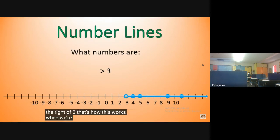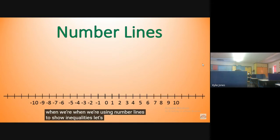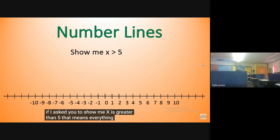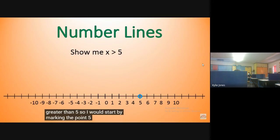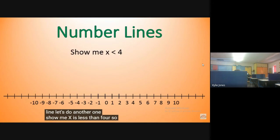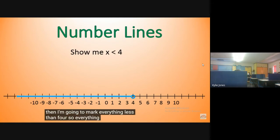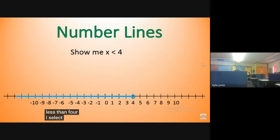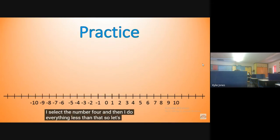Let's do an example. If I asked you to show x is greater than five — that means everything greater than five, all the possible numbers. I would start by marking the point five, and then draw an arrow showing everything greater than five. That's how we show inequalities on a number line. Let's do another one — show me x is less than four. Mark the point four, then mark everything less than four, everything to the left. That's how you show x is less than four.